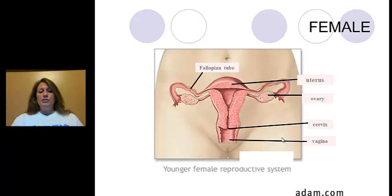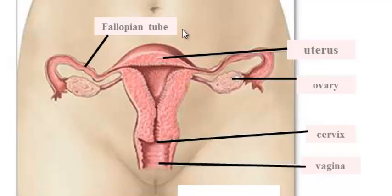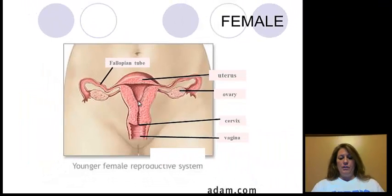Now let's turn to the female reproductive system. You will also have a diagram for this. Starting with the ovary — it's the same on both sides. Leading from the ovary on both sides are the fallopian tubes, also called the oviduct, which you'll see referenced in your lab. The fallopian tubes lead inside the uterus, which has been described as a pear-shaped, upside-down organ. Then out through the cervix, which is the opening between the vagina and the uterus.